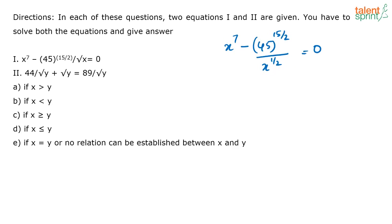So if I take the LCM, then I get x to the power 7 into x to the power 1 by 2 minus 45 to the power 15 by 2, that is equal to 0. Or I can say this is 7—a to the power m into a to the power n is equal to a to the power m plus n.